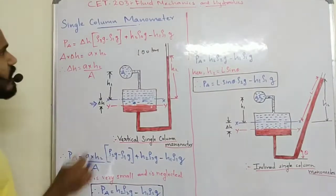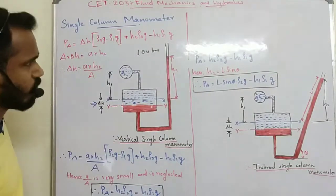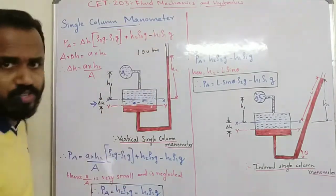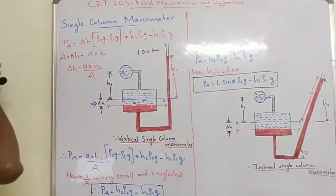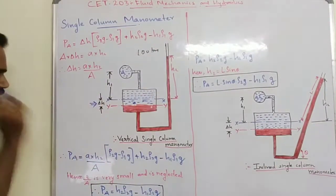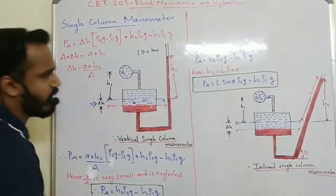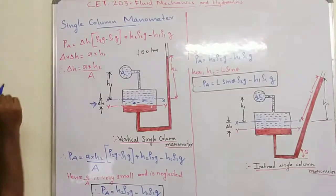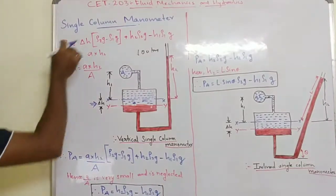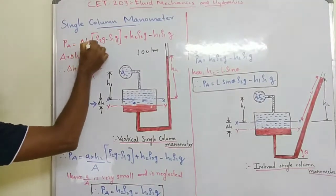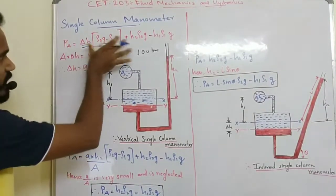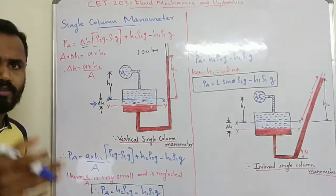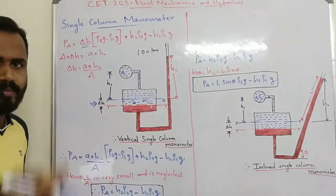The expression is equal to delta h into rho2 g minus rho1 g, plus h2 rho2 g minus h1 rho1 g. This is the final expression. We have the result for the U-tube manometer with pressure on the left limb and right limb.